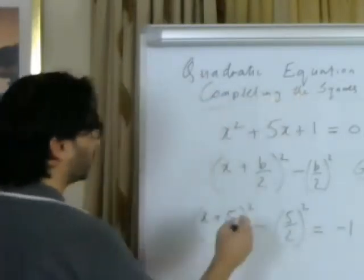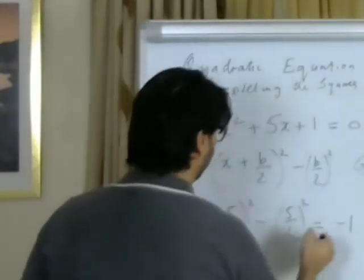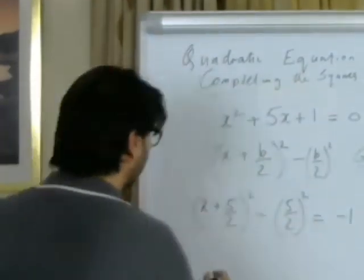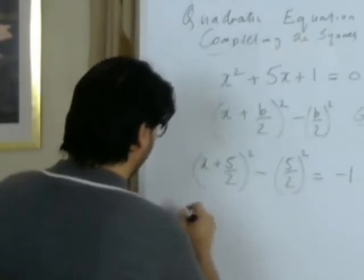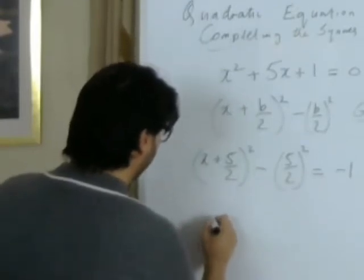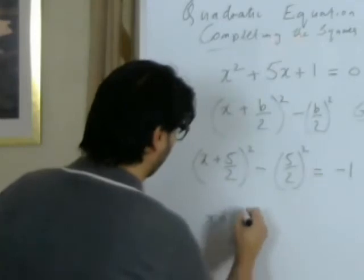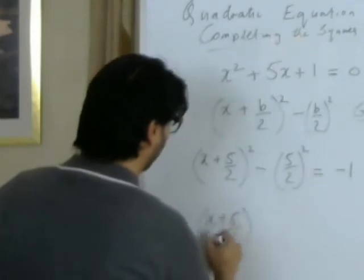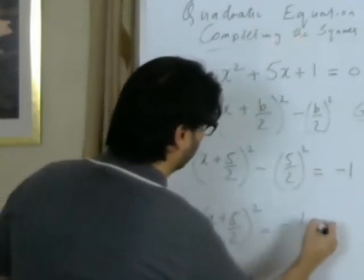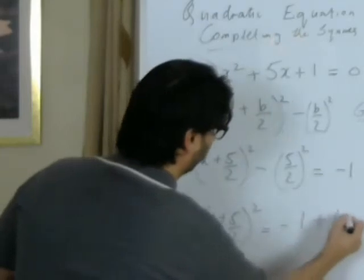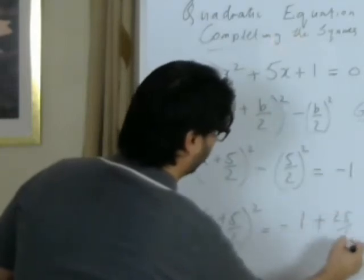This equals minus 1, because we've moved the plus 1 to the other side, making it minus 1. This can then be written as (x + 5/2) squared equals minus 1 plus 25 over 4.